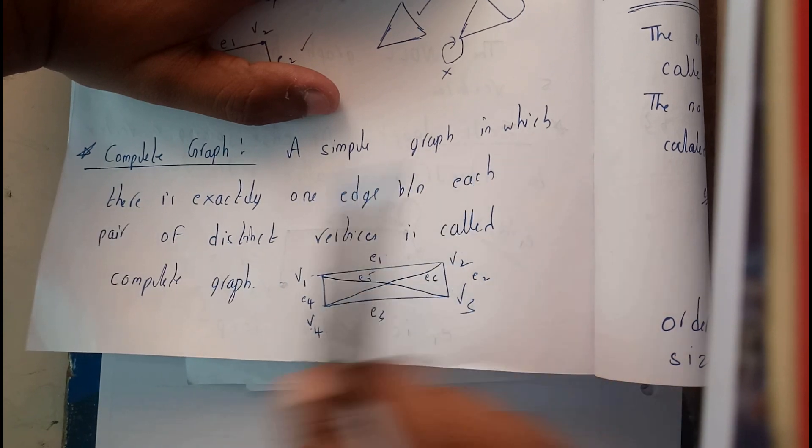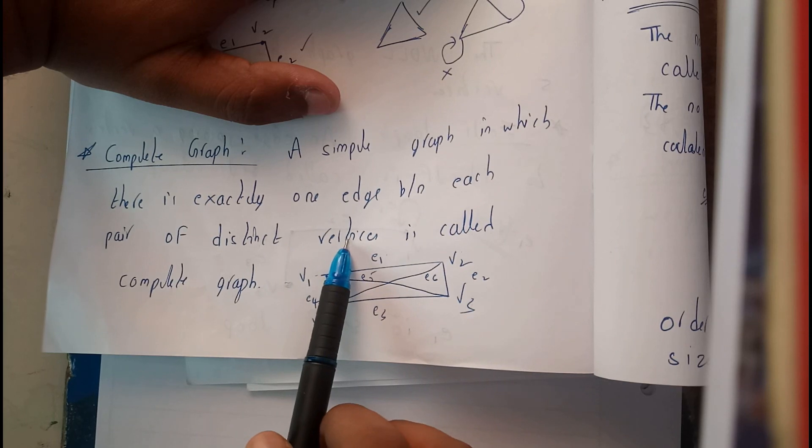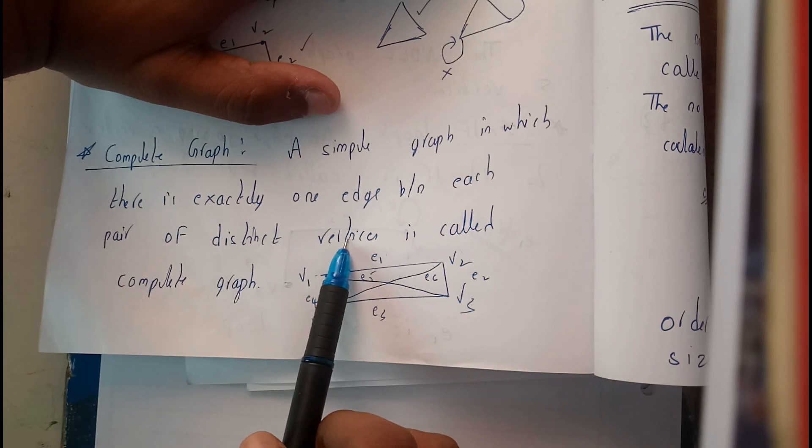A simple graph in which there is exactly one edge between each pair of distinct vertices is called as a complete graph.